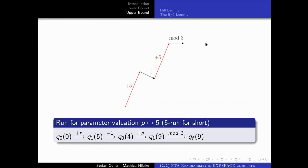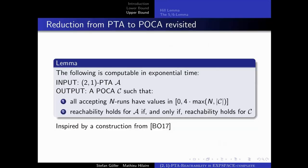Why do we consider POCA? Because we can reduce 2-1 PTA reachability to POCA reachability: given a PTA with two parametric clocks and one parameter, we can construct a parametric one-counter automaton with an equivalent reachability problem, and moreover with counter values for accepting n-runs bounded by 4n (for n sufficiently large). The construction is inspired by a similar one from Bundela and Wagnin.